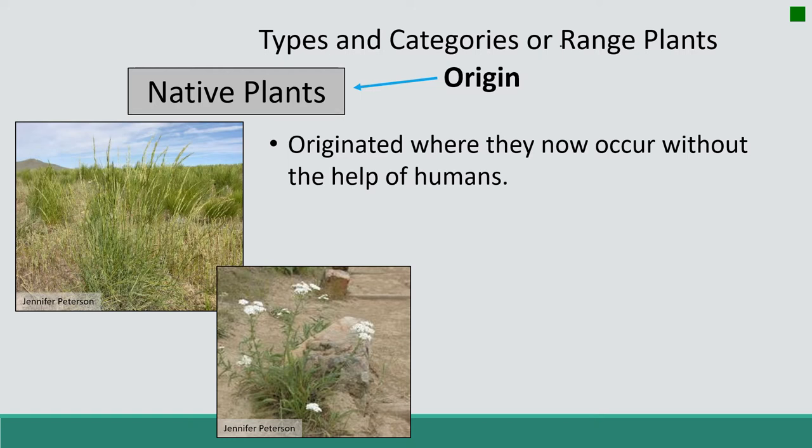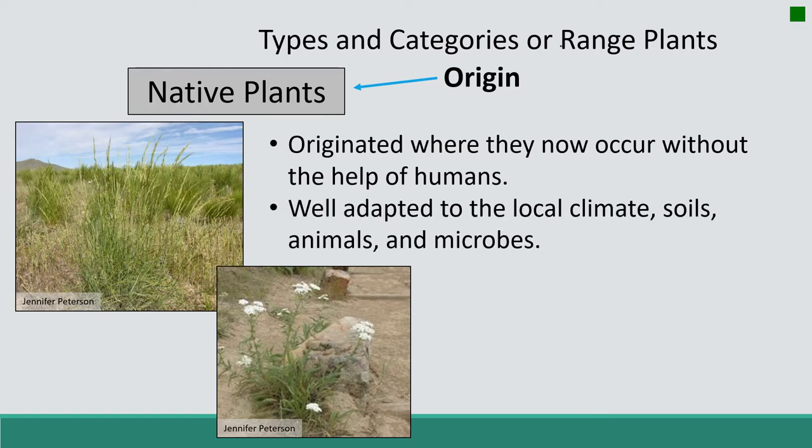So the question is: how long have they been here? An organism's home is also determined by a host of influences. Native plants are well adapted to local climate patterns, soils, animals, and microbes.